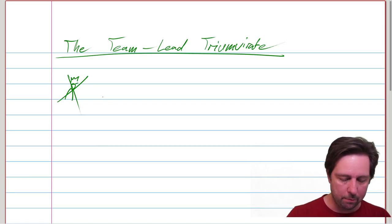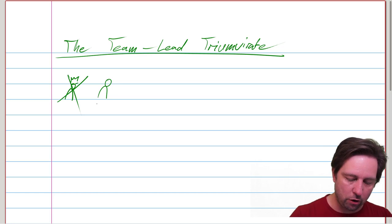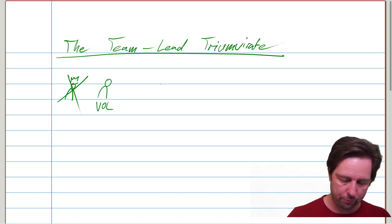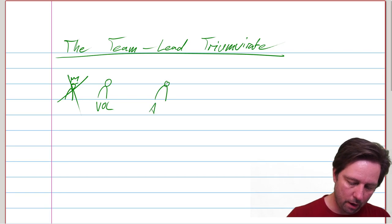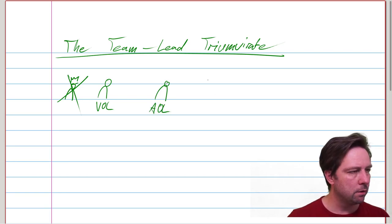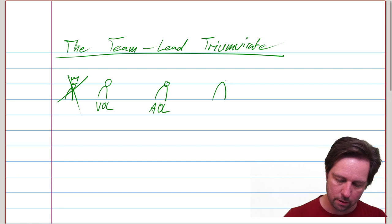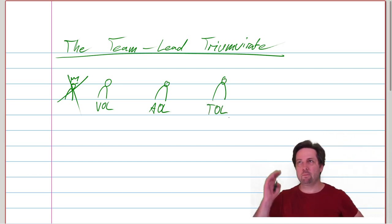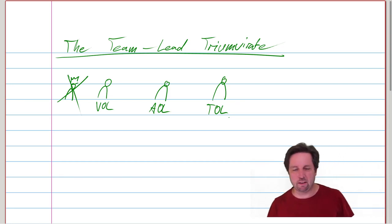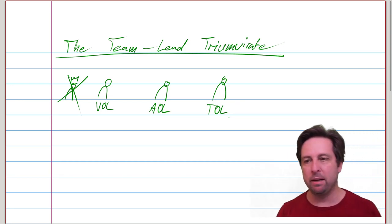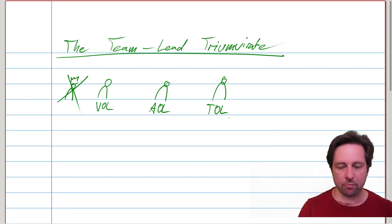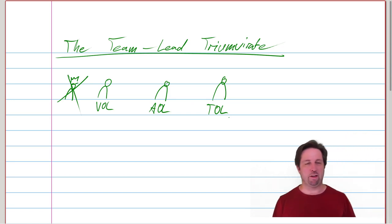And those roles are the value outcome lead, the architecture outcome lead, and the team outcome lead. And these titles, I've taken them from a book called Better Value, Sooner, Safer, Happier. And you're welcome to call them something else.